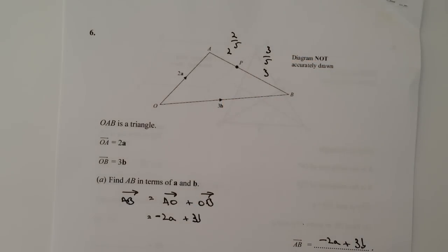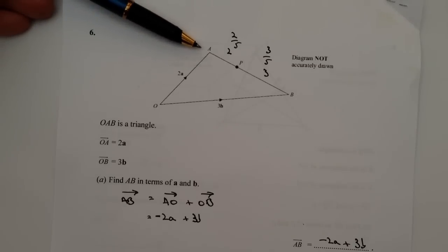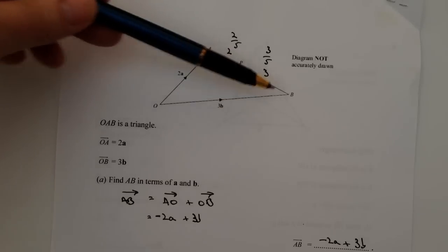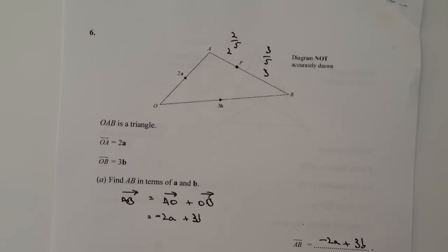Now, I tend to look at vectors as forces. So if you can imagine, if you're pushing something along this line here, if you push it two fifths of the way, you're going to get to P. If you push it the final three fifths of the way, you're going to get to B.